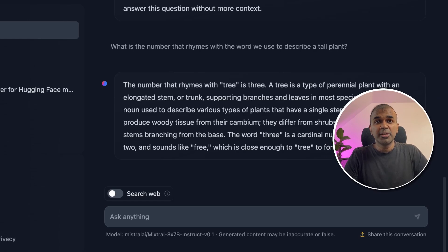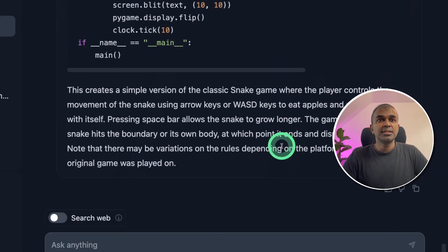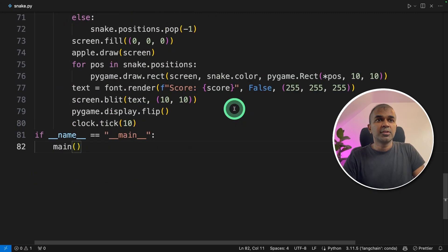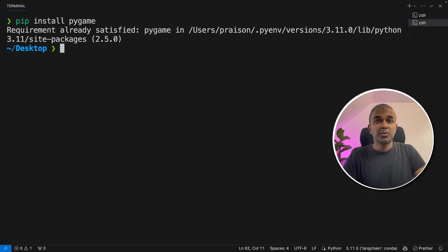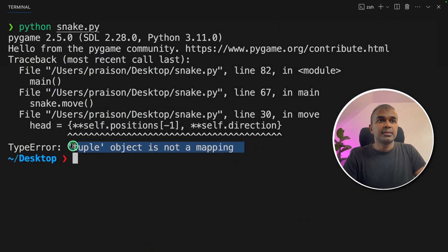Now we are going to test the coding ability. Write a Python program to create snake game. The code got created. I'm going to copy this code, pasted that in the VS code with no errors. pip install pygame to install the package in the terminal python snake.py. It says tuple object not mapping. So this is a fail.